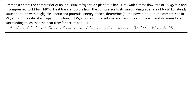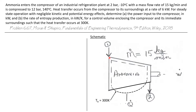For a control volume enclosing the compressor and its immediate surroundings, the heat transfer occurs at 300 degrees Kelvin. Let's draw the schematic of a compressor. We have ammonia flowing in at state 1 with its given conditions, being compressed and flowing out at state 2. There's an input shaft that delivers power to the compressor to cause the compression process. The ammonia has a mass flow rate of 15 kilograms per minute, and there's also a heat transfer from the compressor to the surroundings.